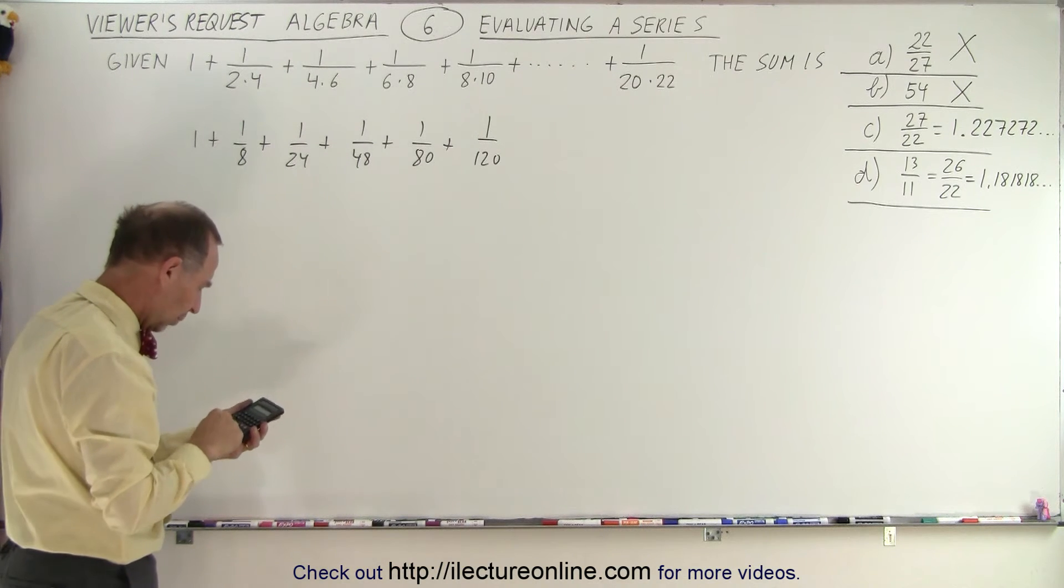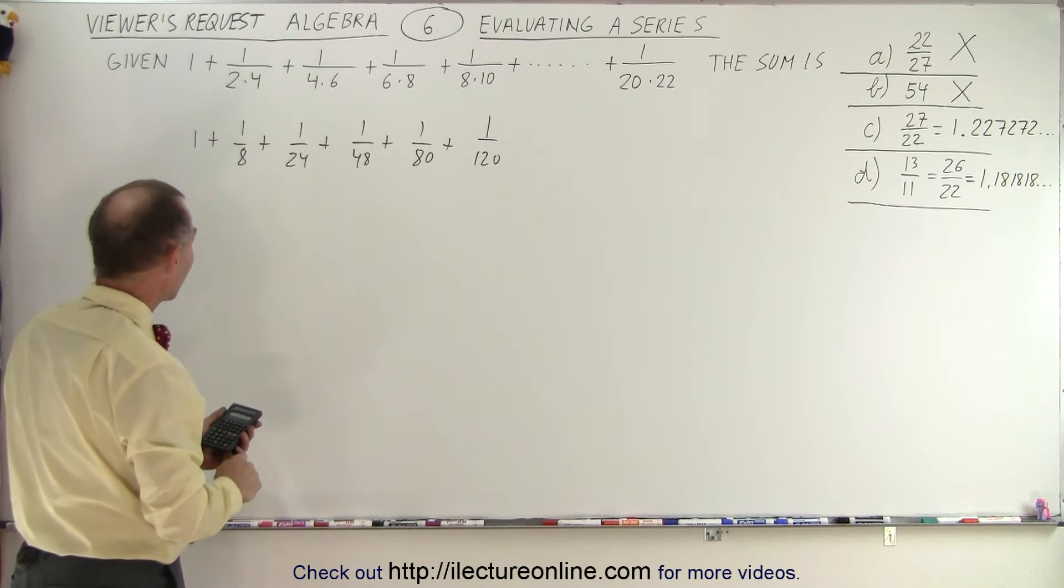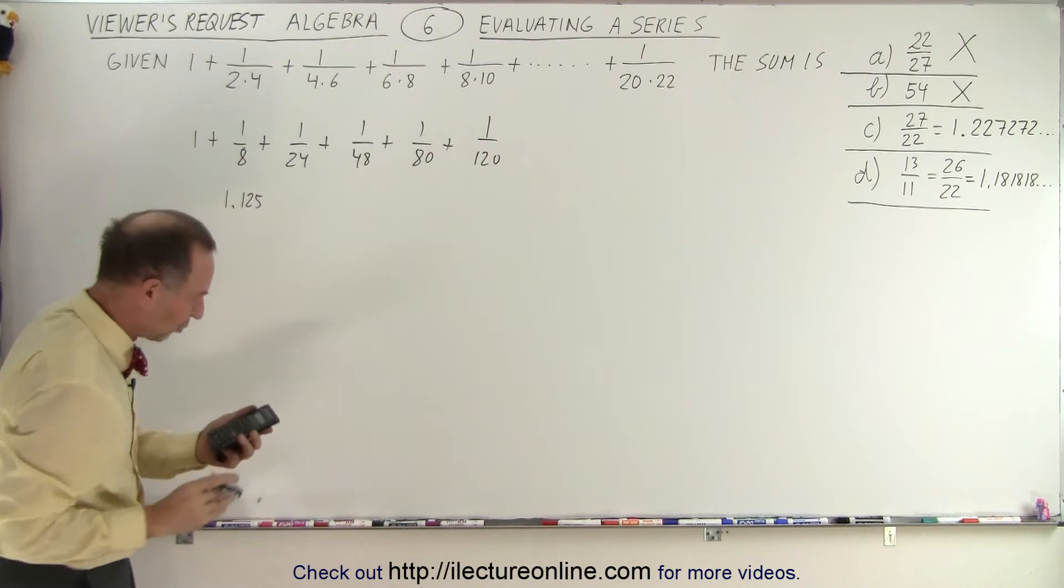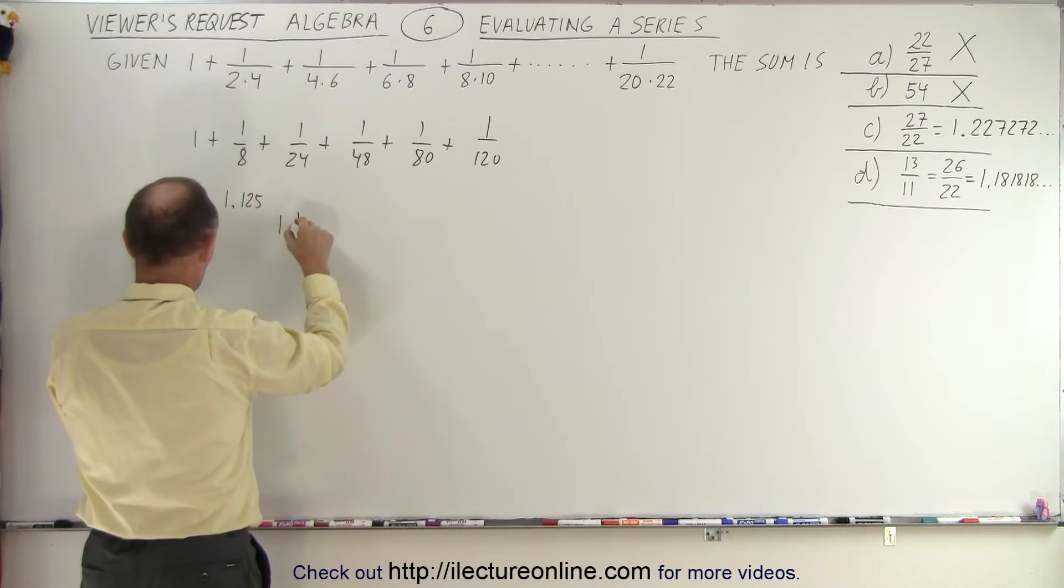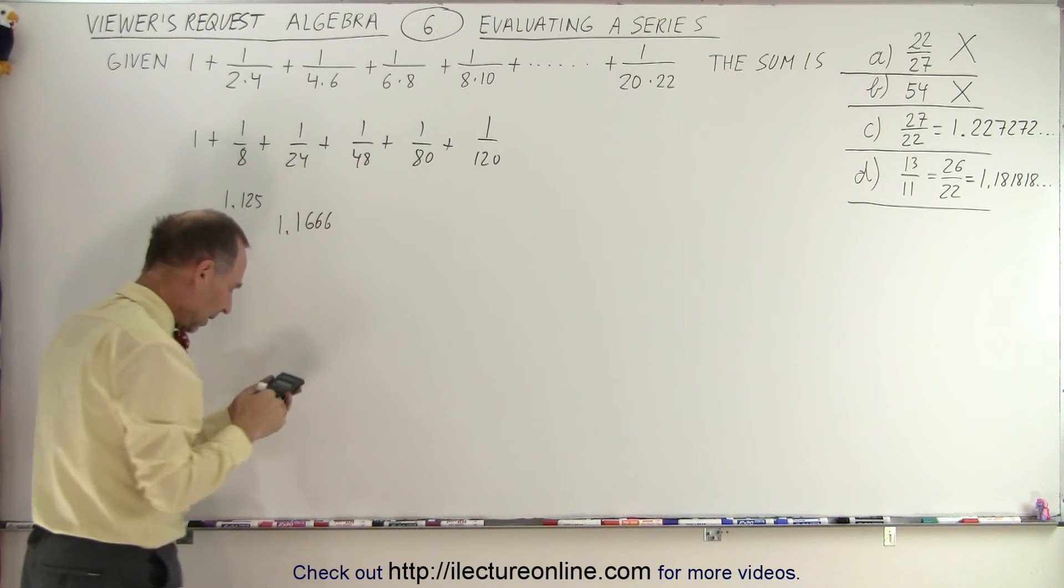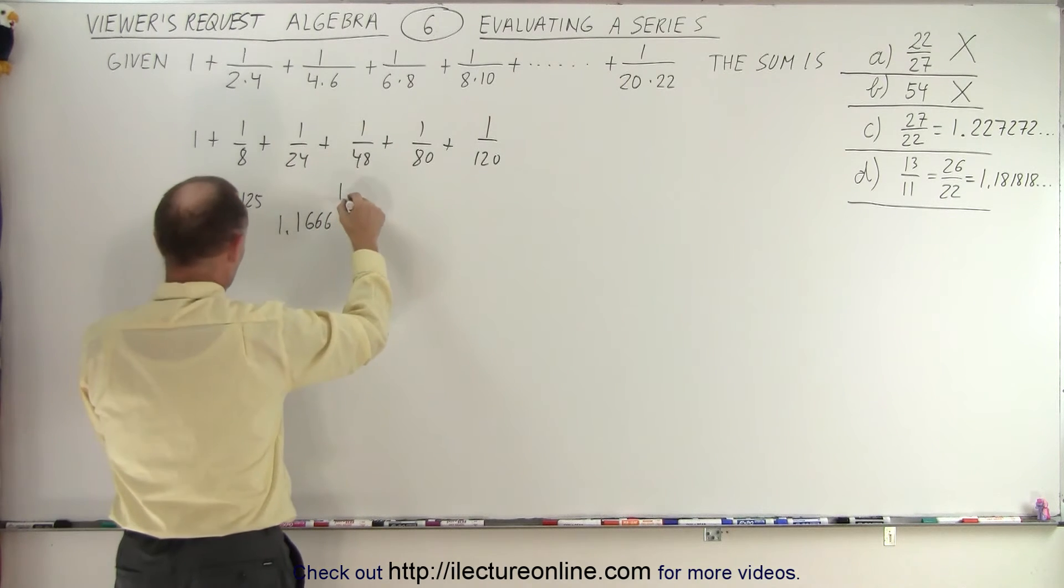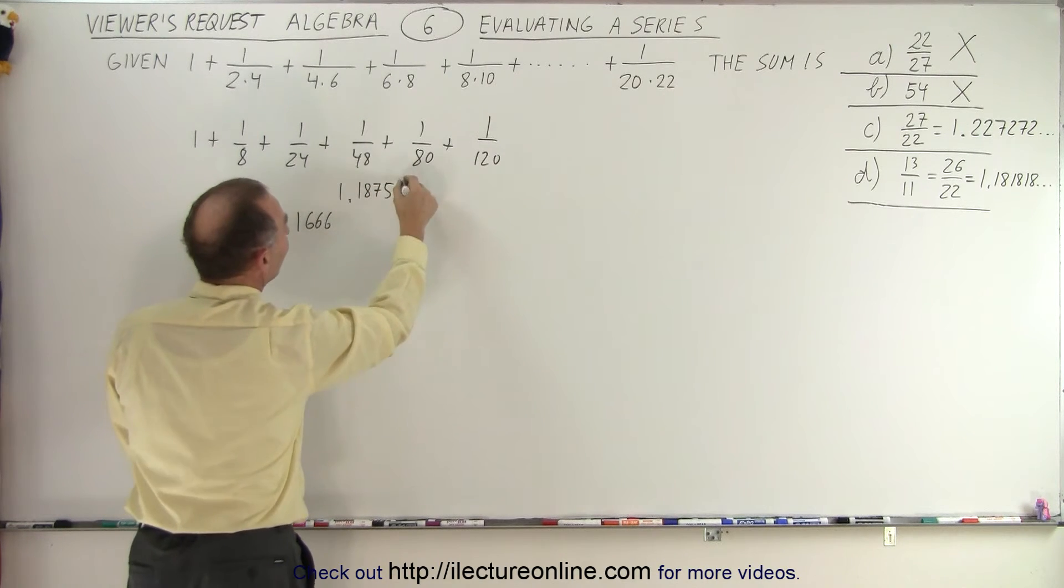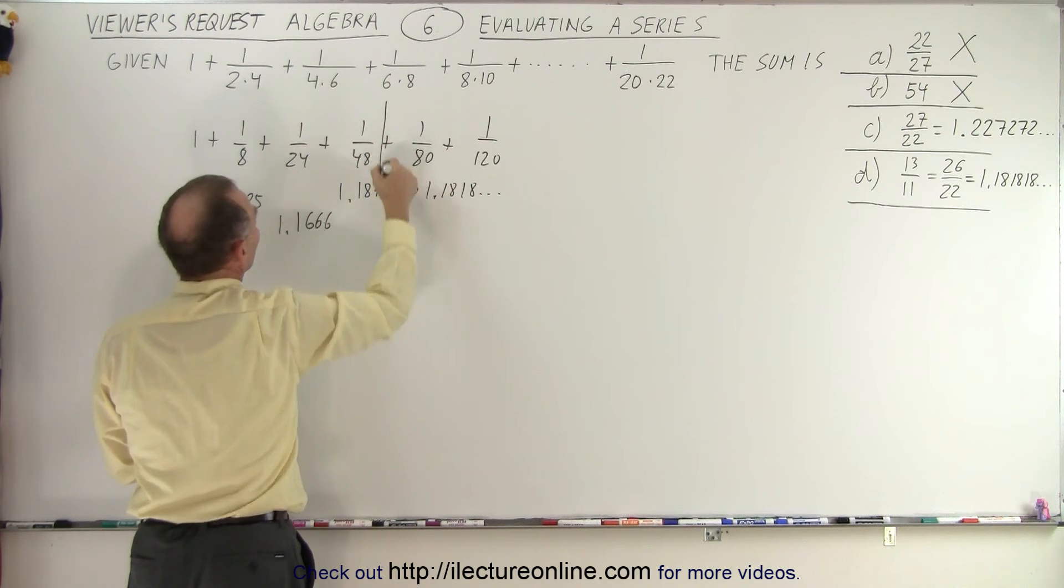So here we have 1 plus 1 divided by 8. And I'm going to write the individual sum so far. So here we end up at 1.125. You wouldn't have to do that, but this is just to illustrate so you can see what's going on. So add plus another 1 divided by 24. So now we're at 1.1666. So now we're going to add plus 1 divided by 48. And now we have 1.1875.